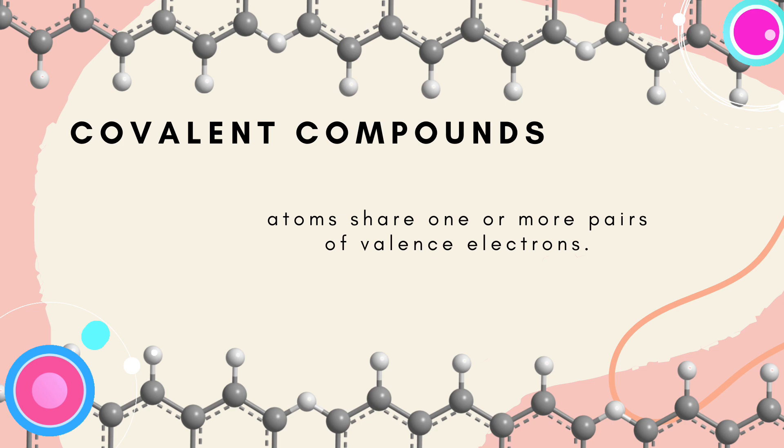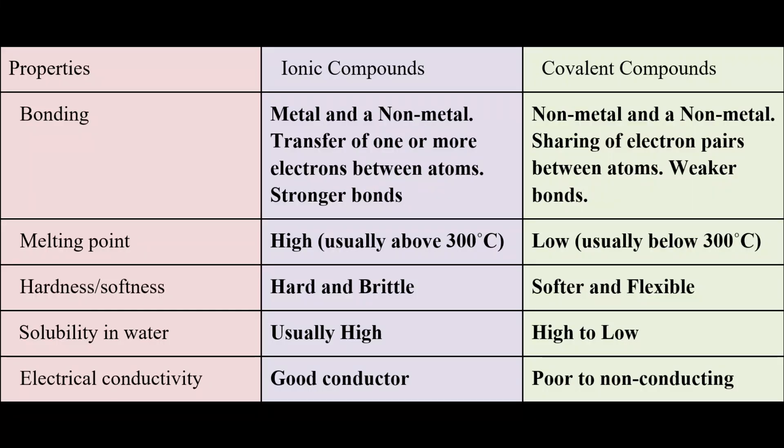Here is a table showing the properties and differences of ionic and covalent compounds. For bonding, ionic compounds tend to have stronger bonds than covalent compounds. For melting point, ionic compounds have a high melting point, usually above 300 degrees Celsius, while covalent compounds have a low melting point, usually below 300 degrees Celsius. For hardness, ionic compounds tend to be hard, while covalent compounds are softer and more flexible.